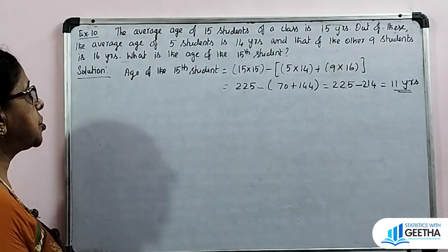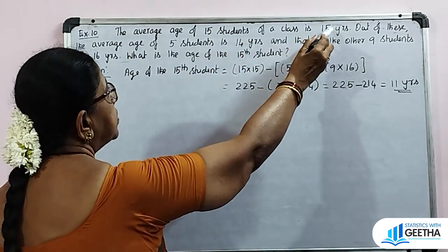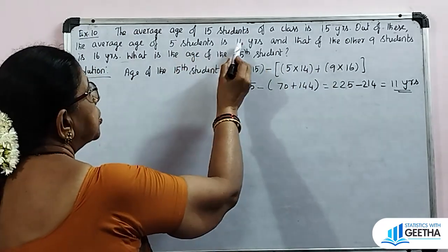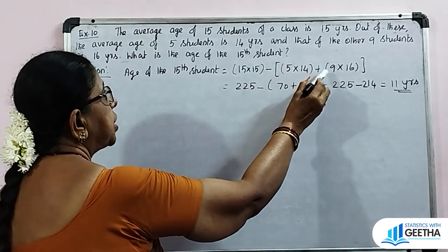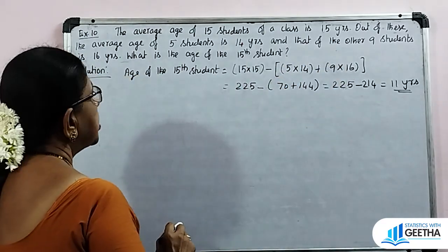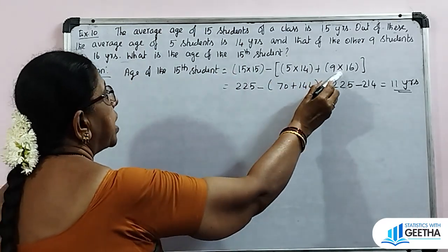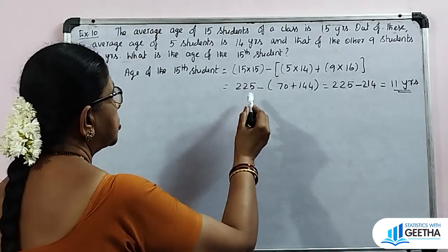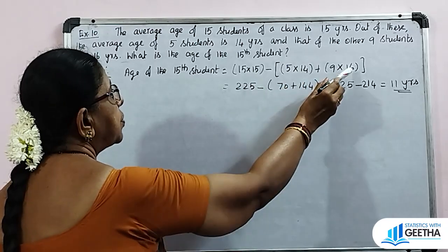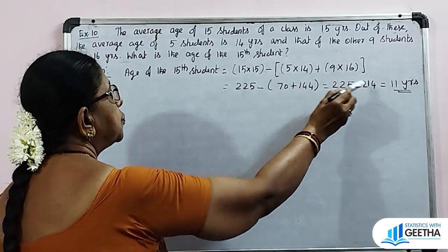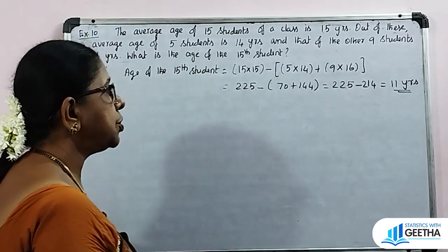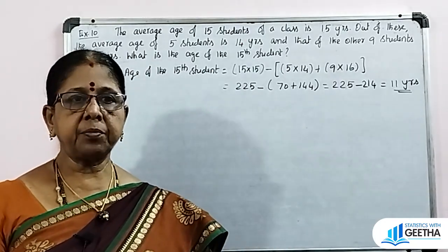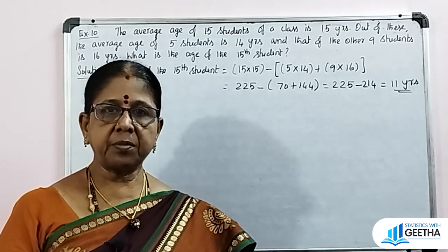Total age equals 15 into 15 equals 225. Sum of 5 students equals 5 into 14 equals 70. Sum of 9 students equals 9 into 16 equals 144. Age of the 15th student equals 225 minus (70 plus 144) equals 225 minus 214, which is 11 years. So the age of the 15th student is 11 years.